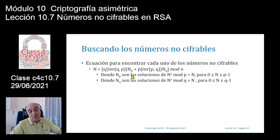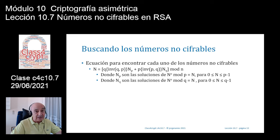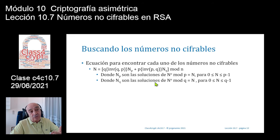NP son todas las soluciones de la ecuación n elevado a la clave pública módulo P igual a n, para n = 0, 1, 2, 3, 4, hasta P-1. Y NQ son todas las soluciones de la ecuación n elevado a E módulo Q igual a n, para n = 0, 1, 2, 3, 4, hasta Q-1.